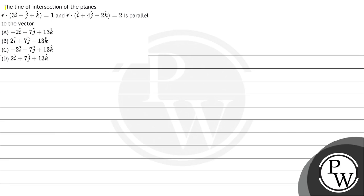Hello. Let's read the question. The question says: the line of intersection of planes r·(3i - j + k) = 1 and r·(i + 4j - 2k) = 2 is parallel to the vector.